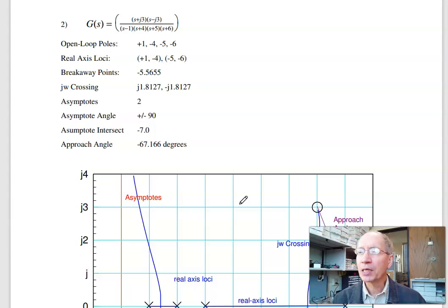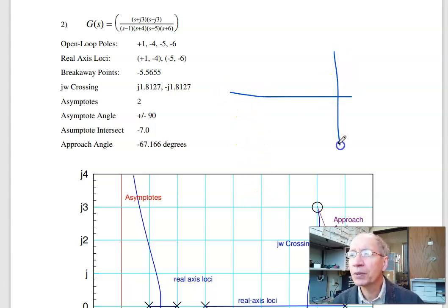Problem two looks at an approach angle. If you have a complex pole, it's called a departure angle; complex zero, called an approach angle. In this case, I've got a pole at plus 1, minus 4, minus 5, minus 6, a zero at plus minus j3.